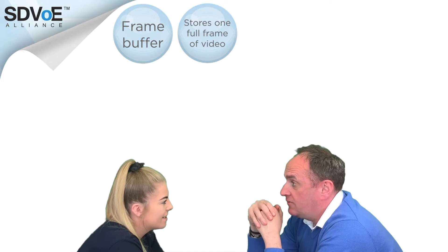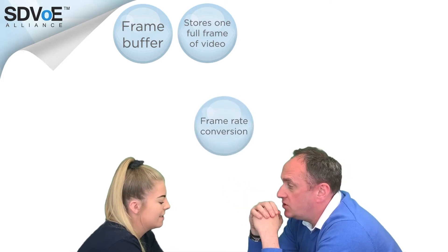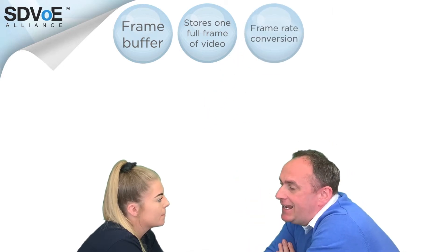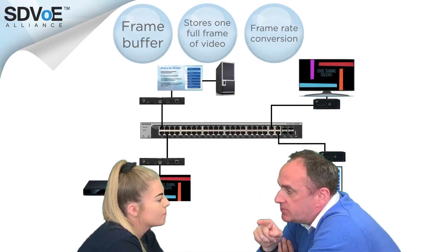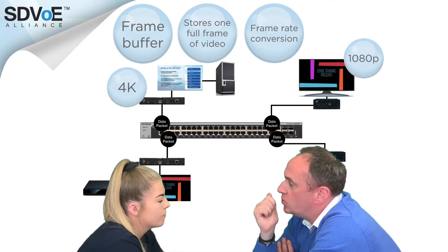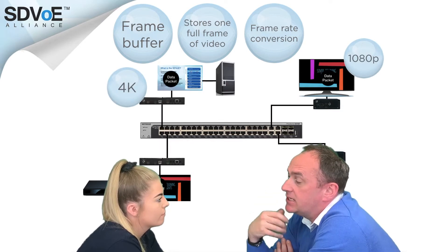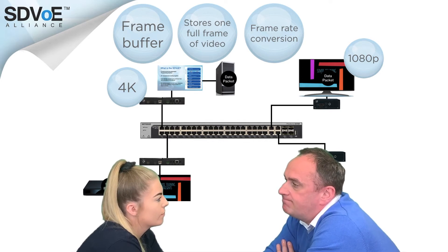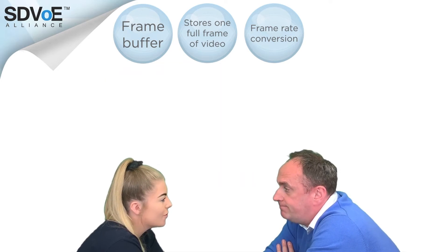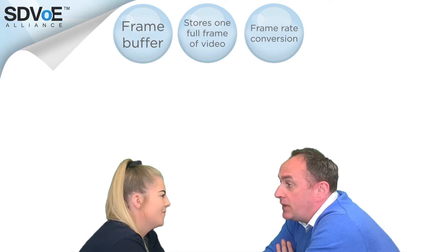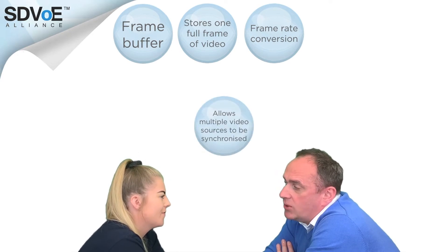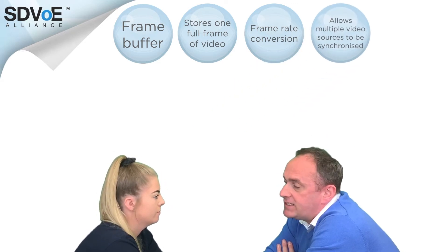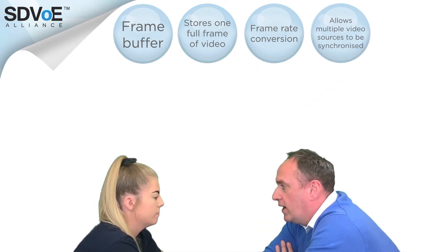Well there are some advantages. It enables frame rate conversion, for example, which gives you fully flexible scaling. Any resolution that goes into the transmitter at one end will be scaled to whatever the resolution is at the display, and since the display doesn't have to adjust to a new signal timing, fast switching is amazing. The frame buffer also allows multiple video sources to be synchronised at the output, effectively unifying all the different clock rates into one.